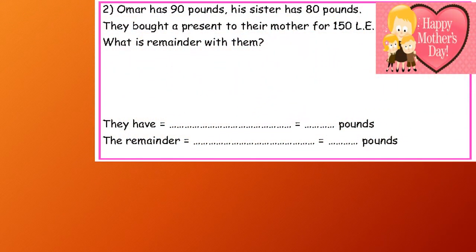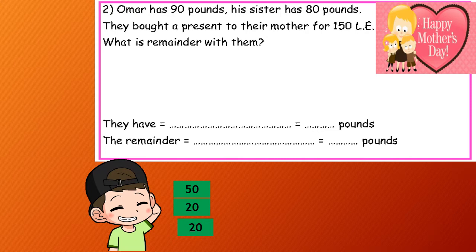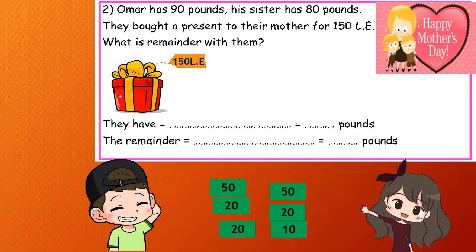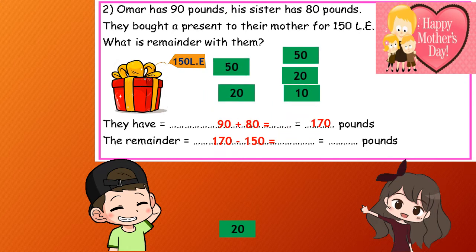Number two: Omar has £90. His sister has £80. They bought a present for their mother for £150. What is the remainder with them? So the two, they wrapped together, £90 plus £80 equals £170. Then they bought £150 for a present. So £170 minus £150, the remainder with them is £20.